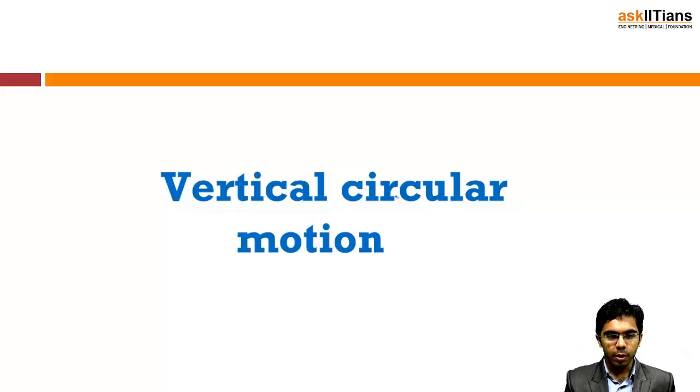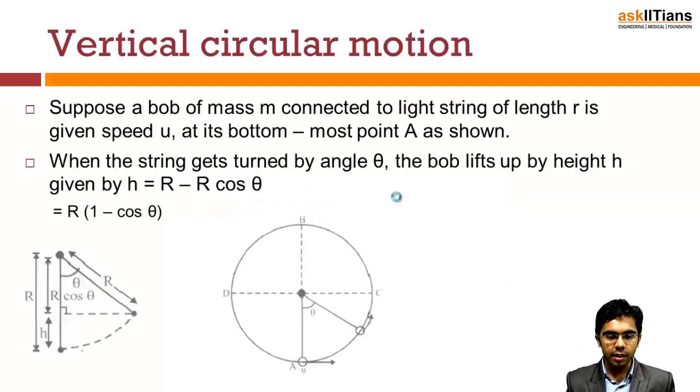Now, vertical circular motion. As in the figure depicted, suppose a bob of mass m connected to a light string of length r is given a speed u at its bottom, most point A as shown. When the string gets turned by angle θ, the bob lifts by height h.